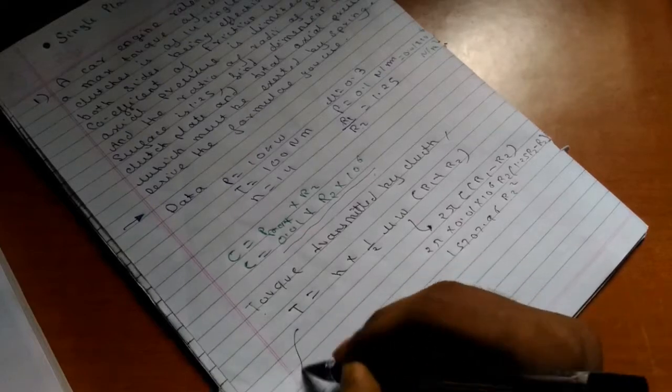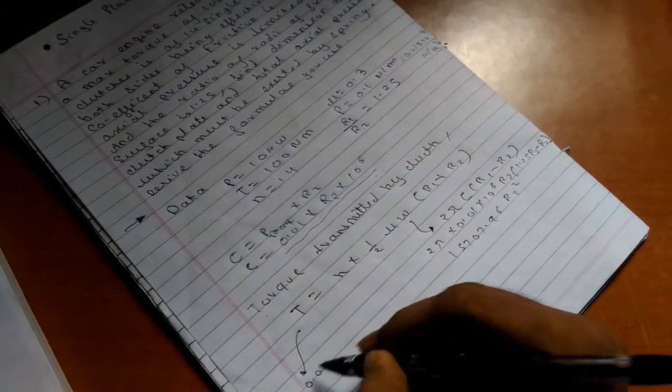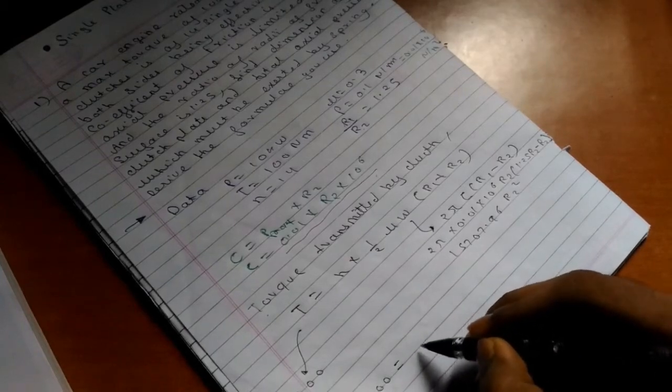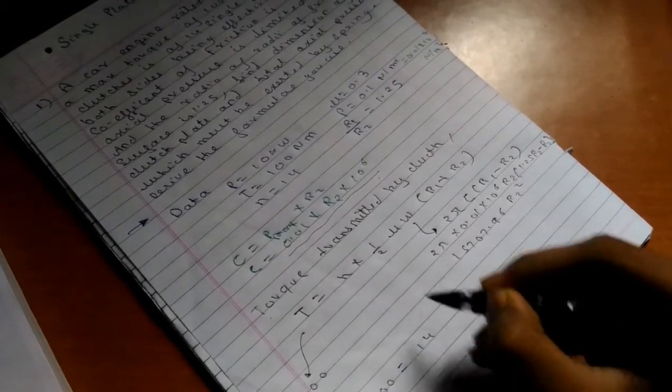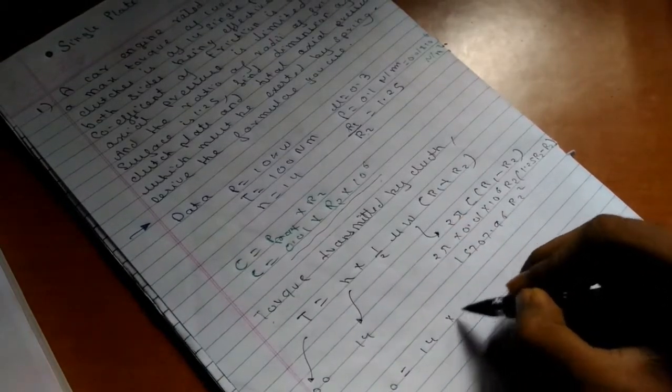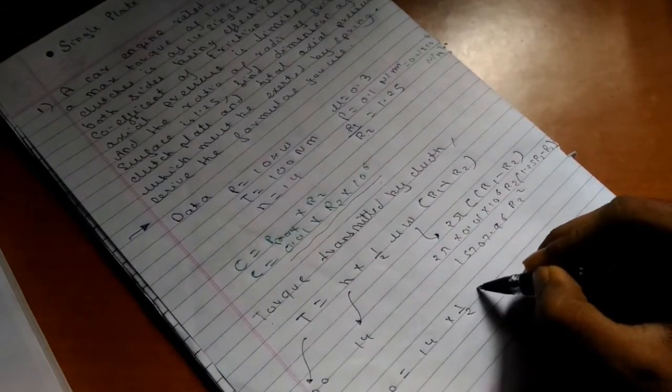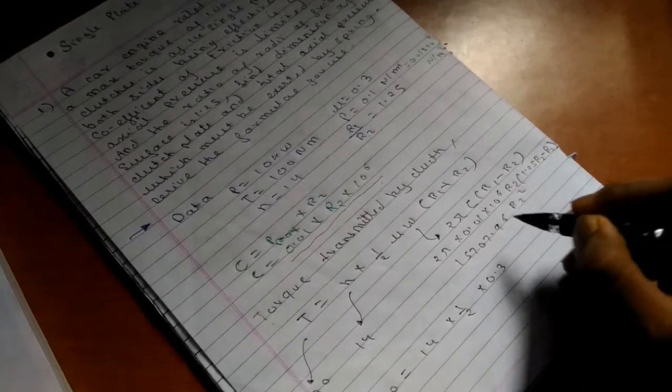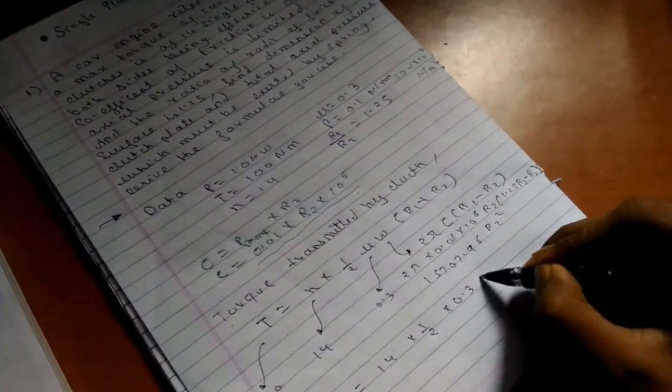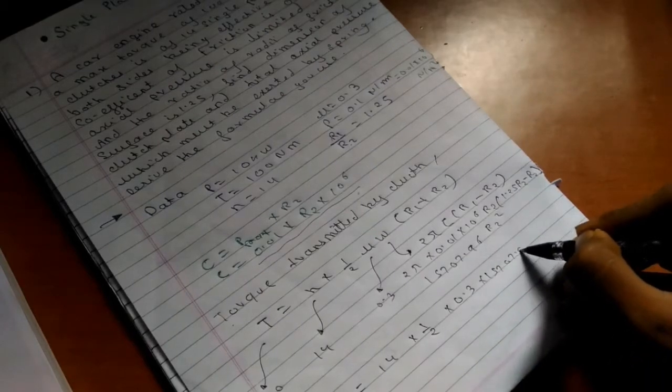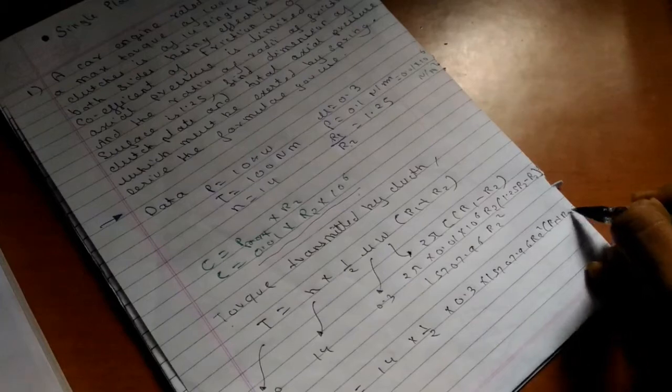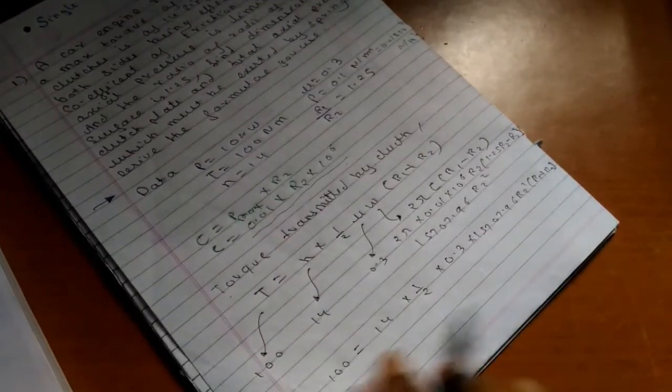Now substituting into the torque equation, since torque transmitted is 100 and number of plates is 14: 100 = 14 × 1/2 × 0.3 × 15707.96 × r2² × (r1 + r2).